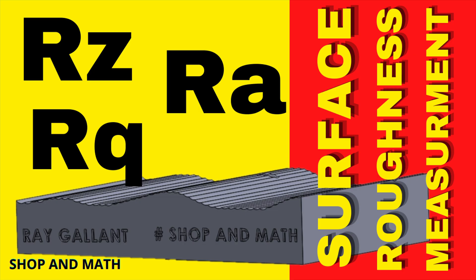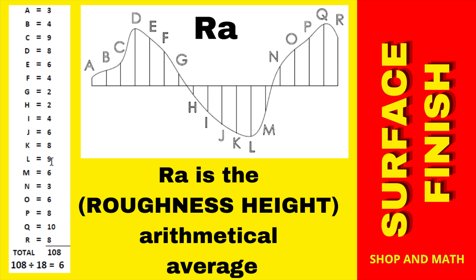Typical ways of obtaining surface roughness measurements are RA, RQ, and RZ. RA is probably the most popular — it stands for roughness average. Basically, you take heights at multiple points — in this example, 18 points totaling 108 — and take the average, which gives you 6. So the RA would be 6. RA, RQ, and RZ are just settings you'll use on the surface roughness tester, and it will do the equation for you.